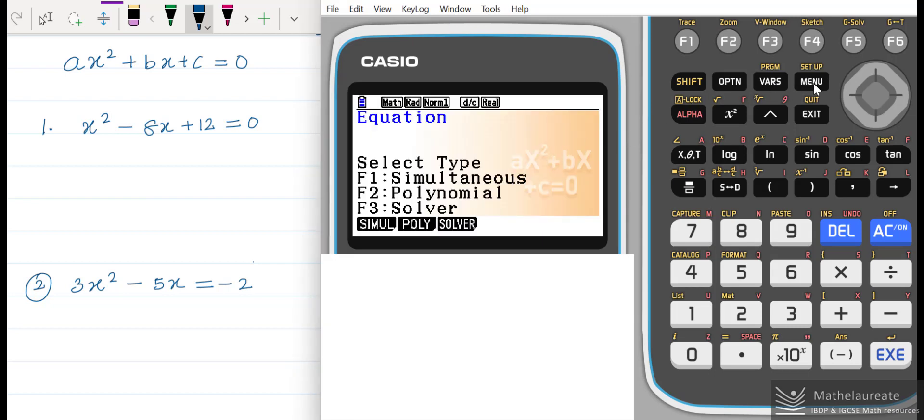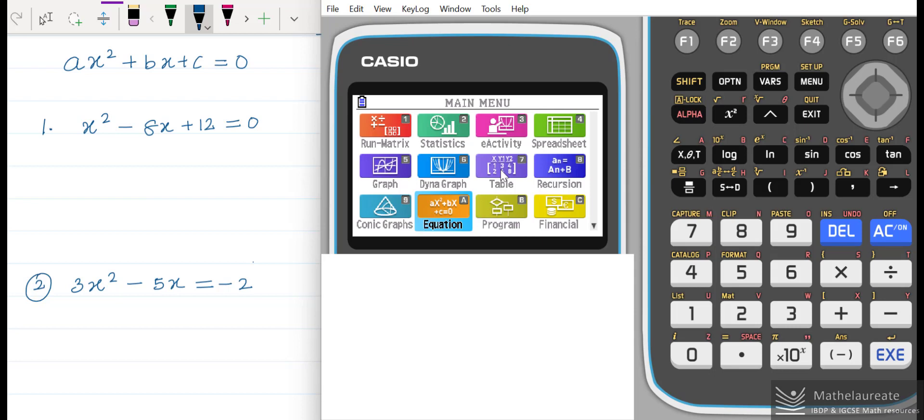In the main menu, choose the option of the equation. This is the second title in the third row. You can move the cursor to select the equations.